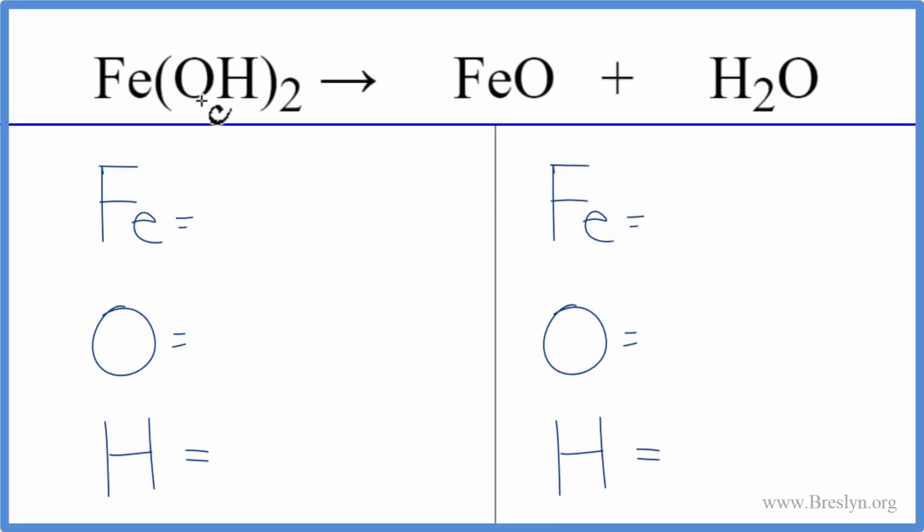In this equation, we have iron 2 hydroxide decomposing into iron 2 oxide plus water. So it's breaking apart into these compounds here.